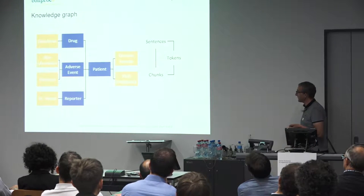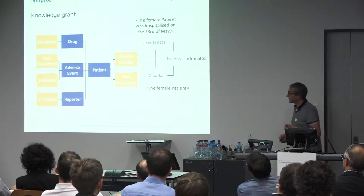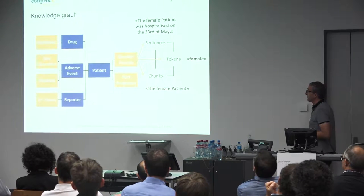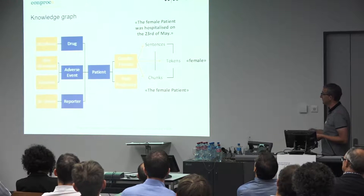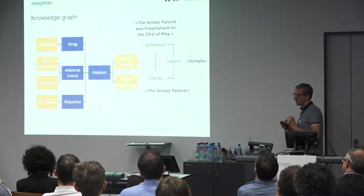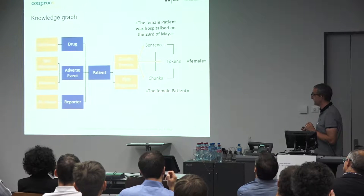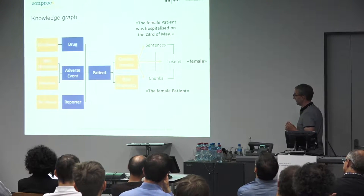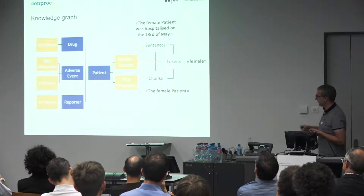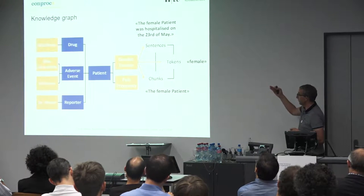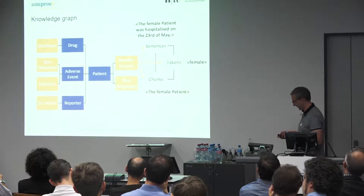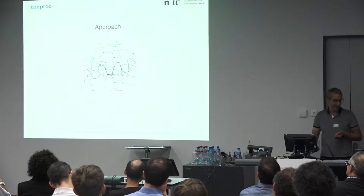To go further into detail — in a text, when we look at gender, it may be mentioned that a female patient was hospitalized. So we have a hint. We try to come from different directions to validate and bring all the information together from the text. In a sentence we have a hint, we have chunks like 'the female patient', or a token 'female'. So we can validate and say obviously we have a female patient.